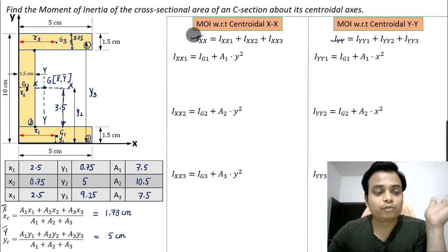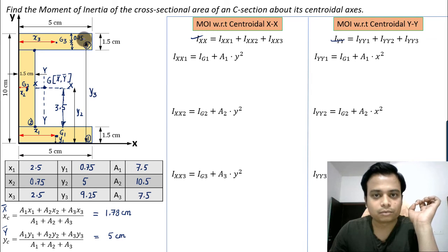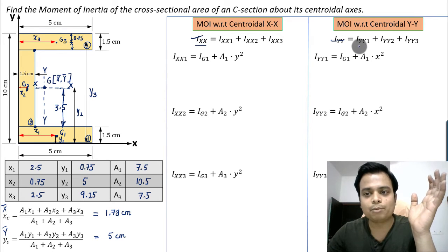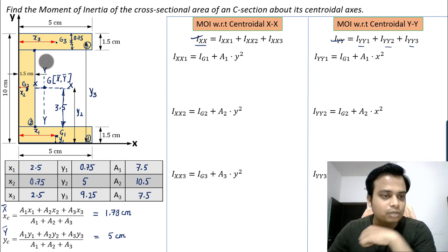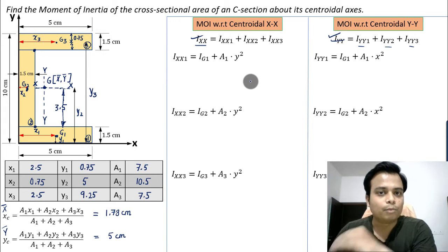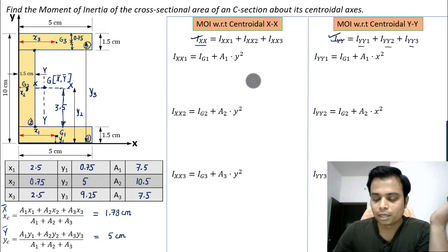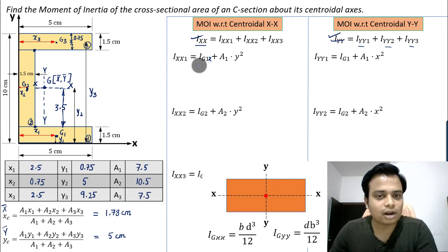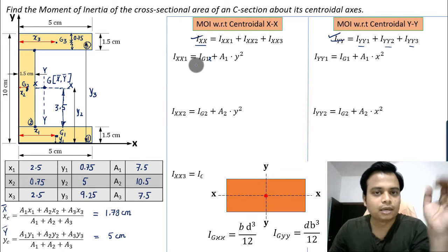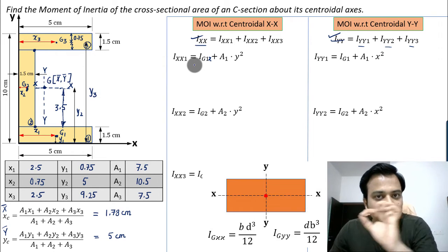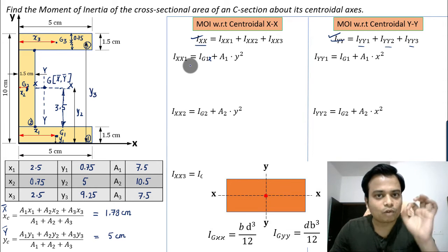Now for step two, we find the moment of inertia with respect to centroidal X-X and centroidal Y-Y. We need to find the individual MOIs of rectangles 1, 2, and 3 with respect to centroidal X-X, sum them up, and do the same for Y-Y. The moment of inertia of a rectangle about its own centroidal axis is bd³/12, where b is the width and d is the depth.